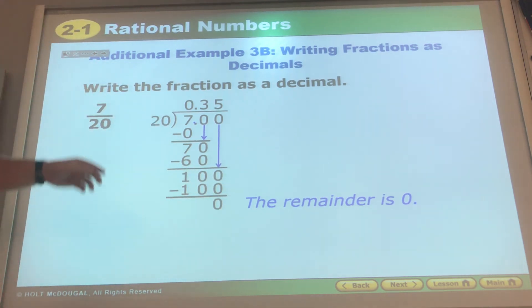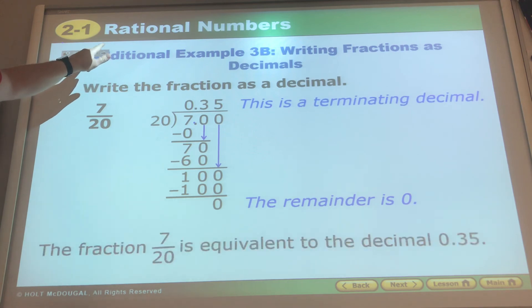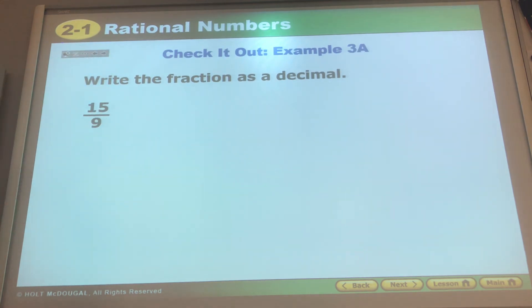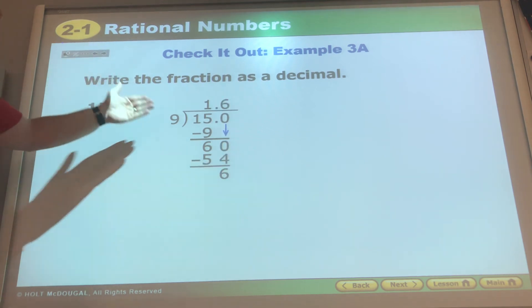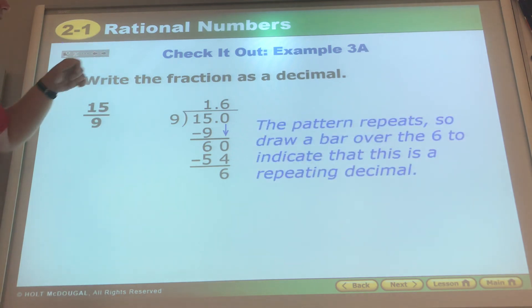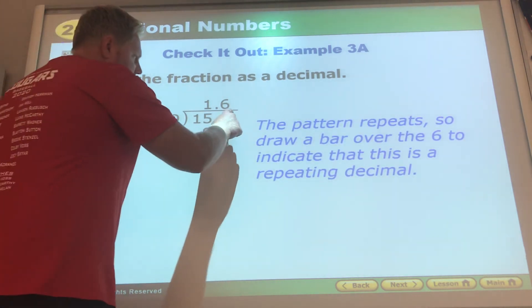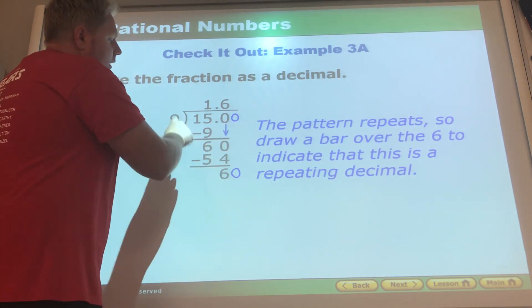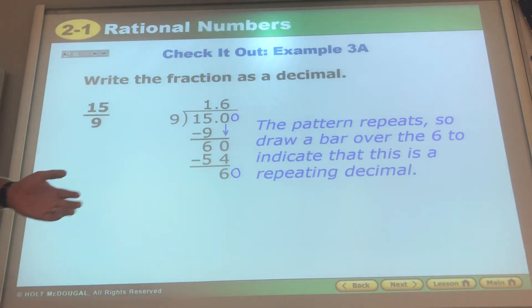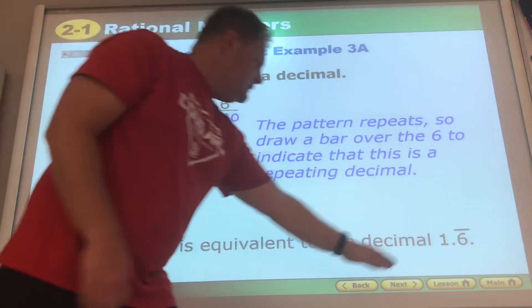Write the fraction as a decimal: 15/9. Numerator always on the inside, denominator always on the outside, no matter their size. 9 will go into 15 one time, 1 times 9, get your subtraction, we've got the decimal. 54, 9 times 6 is 54, there's a 6 there. The pattern repeats, do you see how if we would bring down another zero it's 60 again and we do 54 and it'd be 60 again. So we will put a bar over the 6 to show that it repeats, and 15/9 is equal to 1.6 repeating.